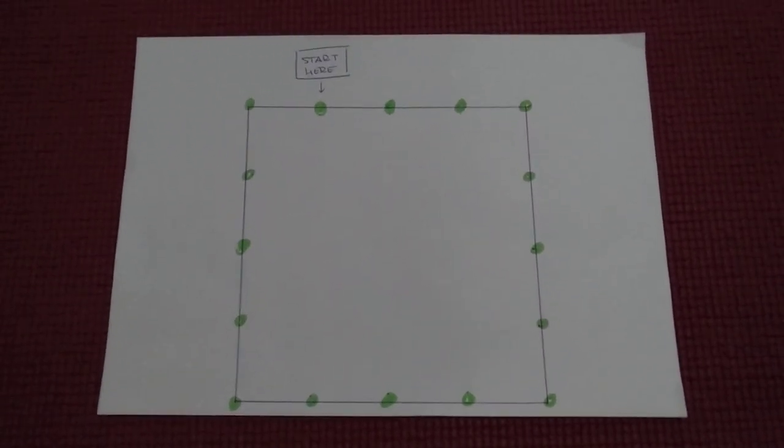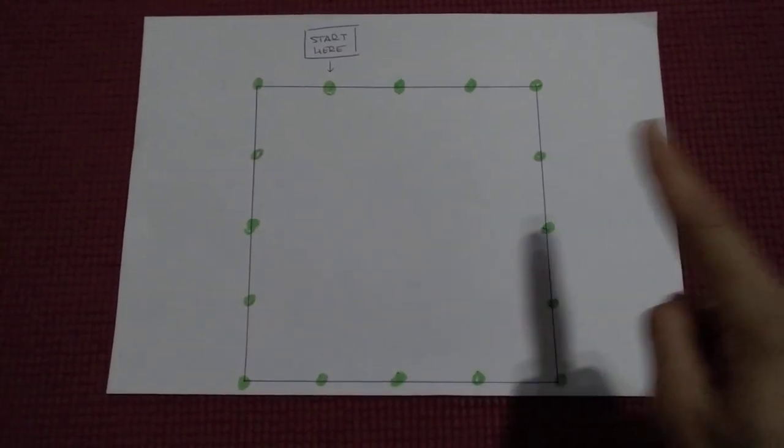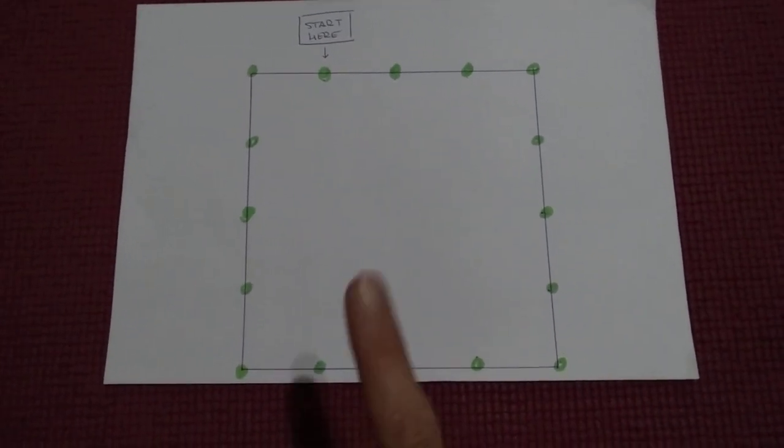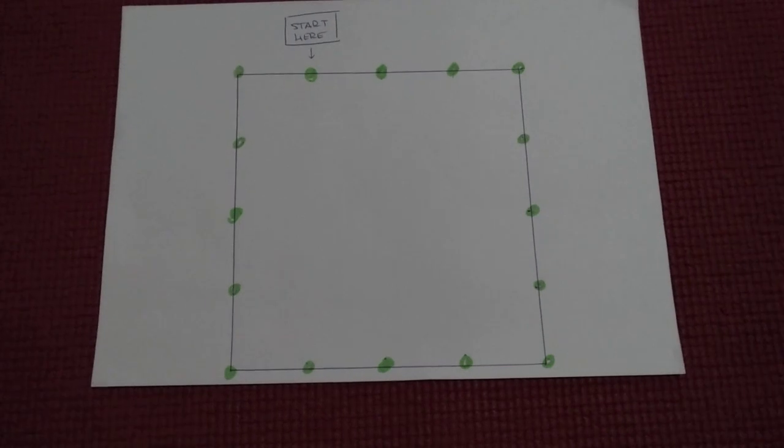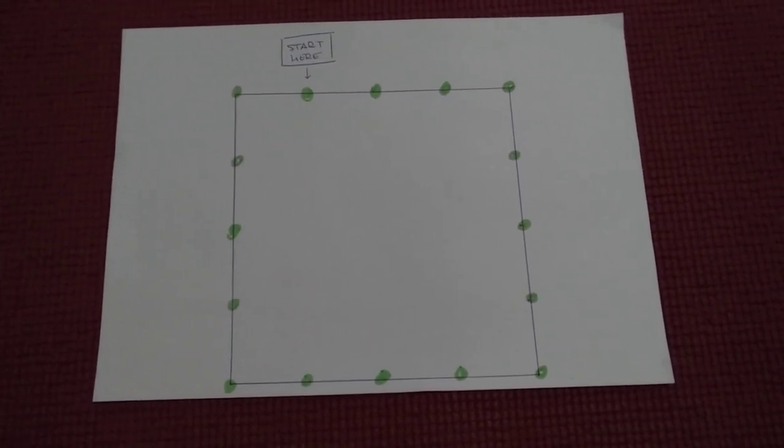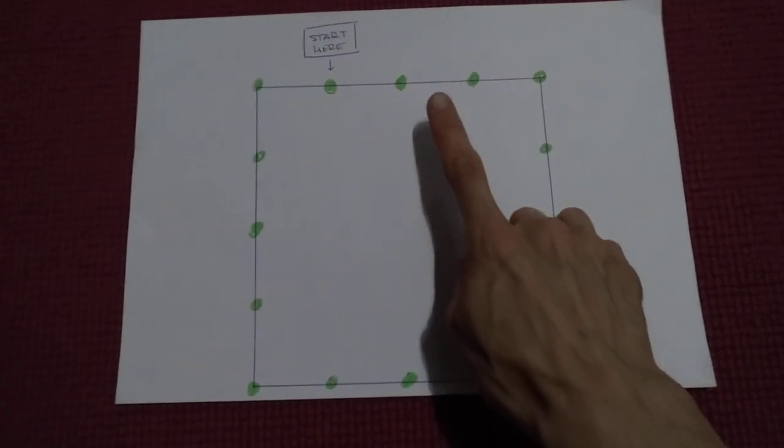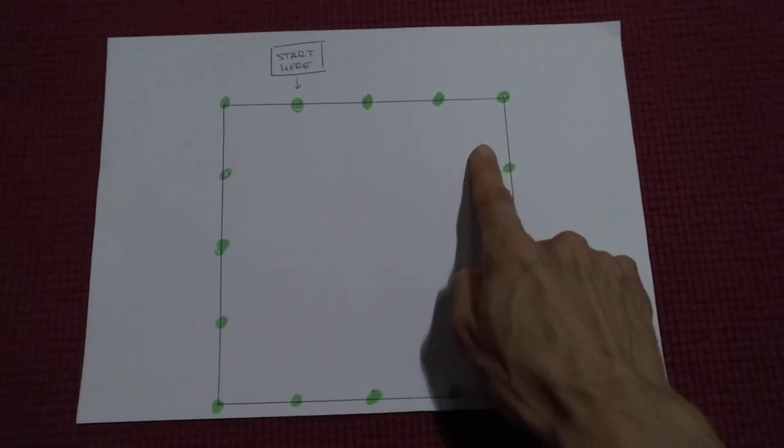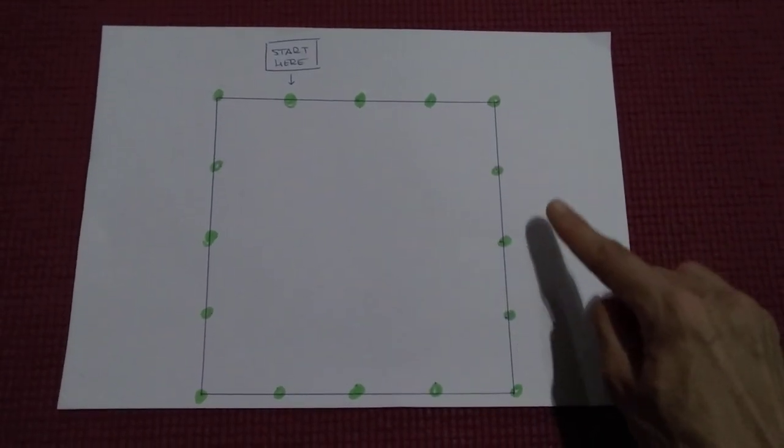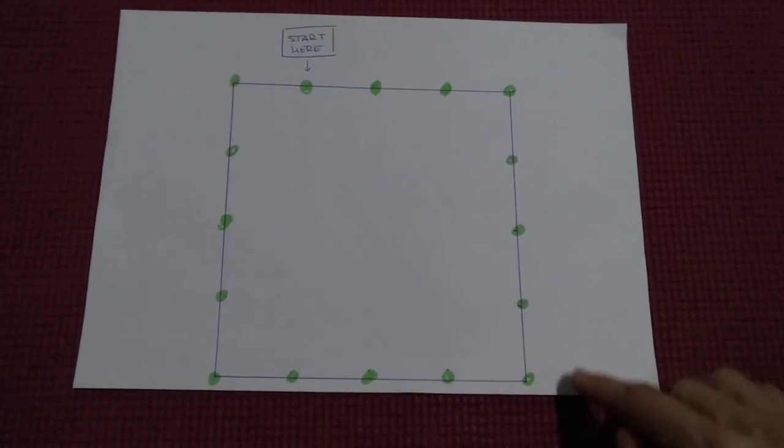Draw a square like this one that you can see here, and inside of this square you need to place one, two, three, four dots, and then one, two, three, four dots on the next side.